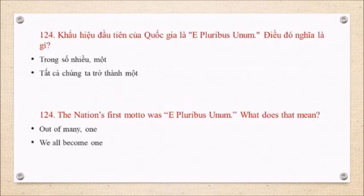Question 124: The nation's first motto was 'E pluribus unum.' What does that mean? Out of many, one. We all become one.